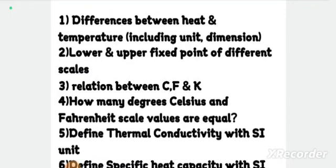For Celsius scale: 0 and 100. Fahrenheit scale: 32 and 212. Kelvin scale: 273 and 373. The relation formula is very important: C/5 = (F−32)/9 = (T−273)/5.